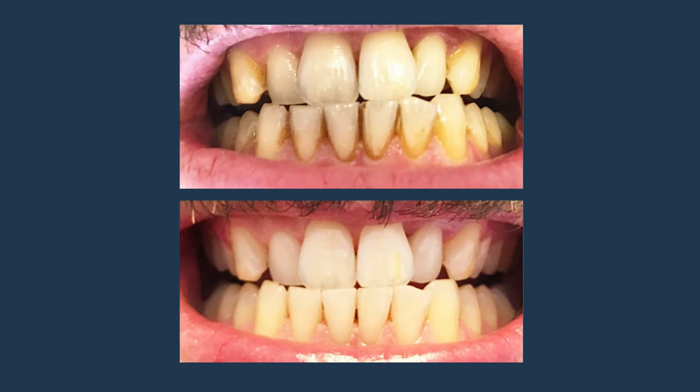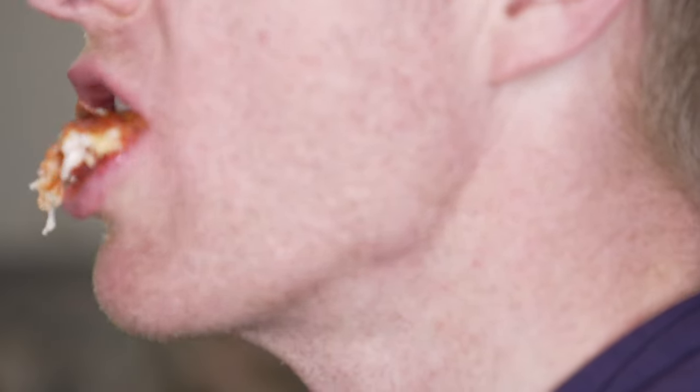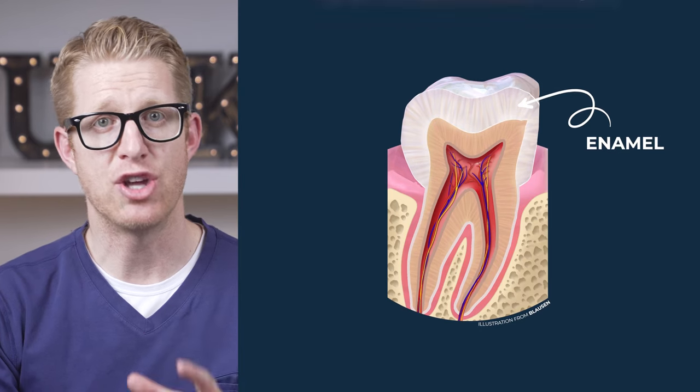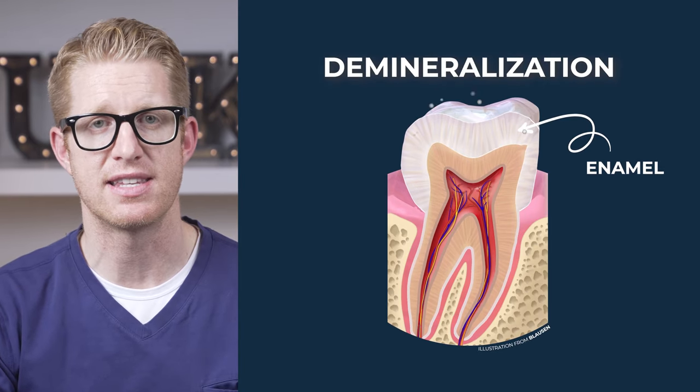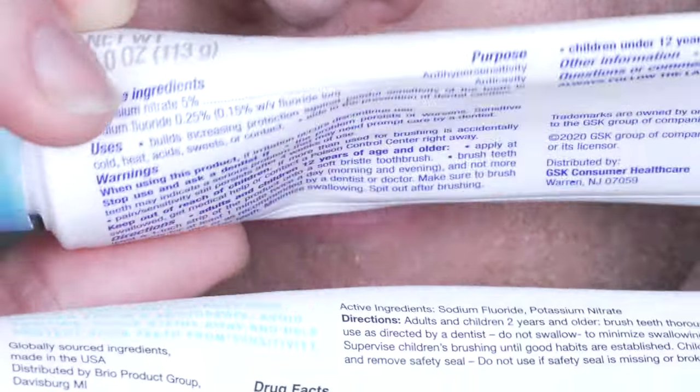Teeth whitening can also cause temporary dentin hypersensitivity — temporary because it usually will subside a short time after whitening has been stopped. Antisensitivity toothpaste will help reduce the whitening sensitivity. If you eat a lot of acidic foods, avoid brushing right after your meals, as this will wear your enamel thin because the acid leaves the enamel in a demineralized and easily abradable state. Even if the acids don't wear down your enamel, they can still cause cold sensitivity. Antisensitivity toothpaste works well here, and avoiding acidic foods will help stop this from progressing.